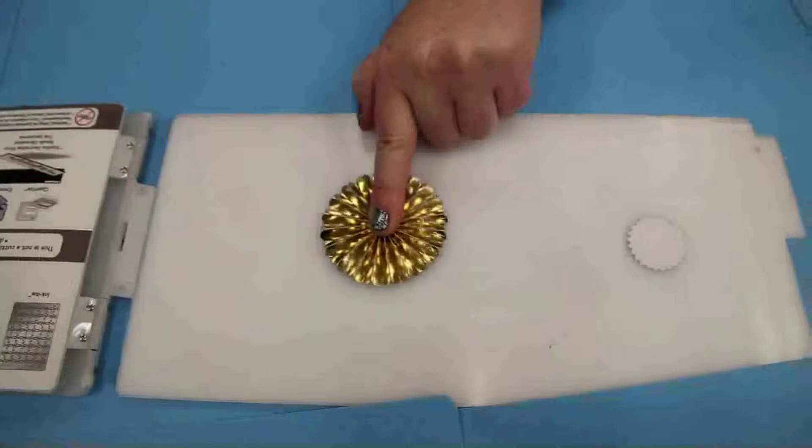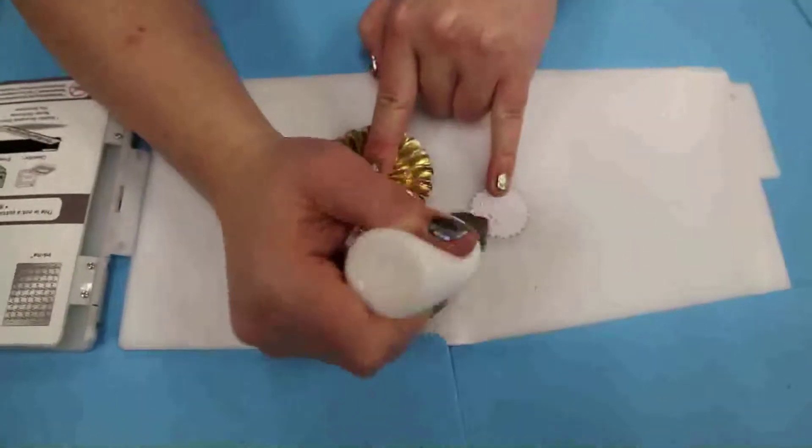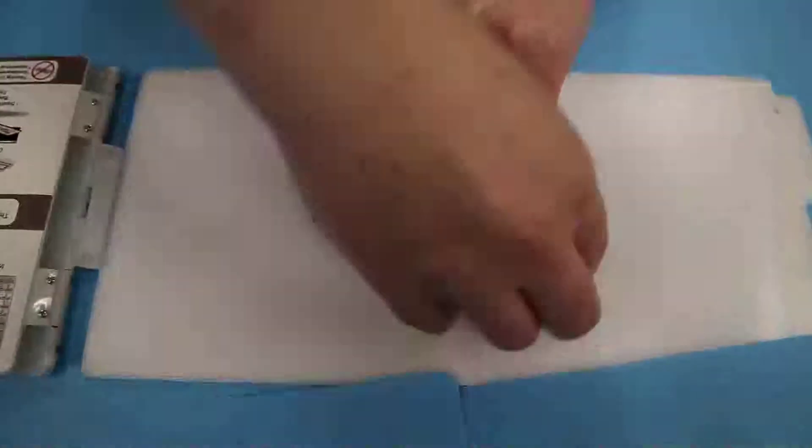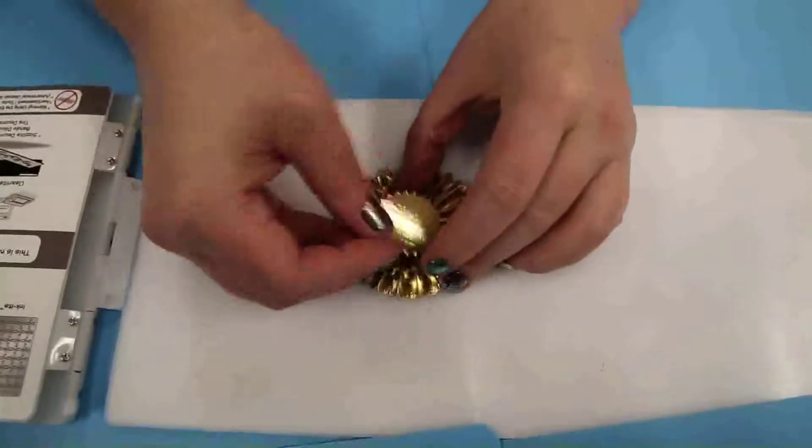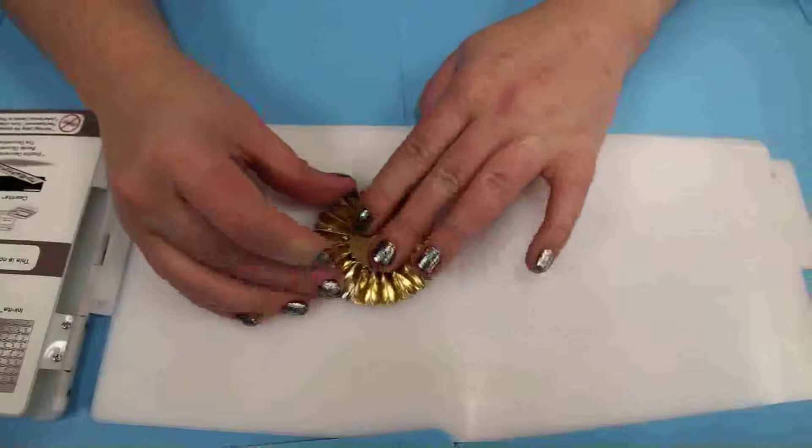And then you're going to take the other medallion, and you're going to put glue on it, and you're going to put that right on the top. Center it just like that.